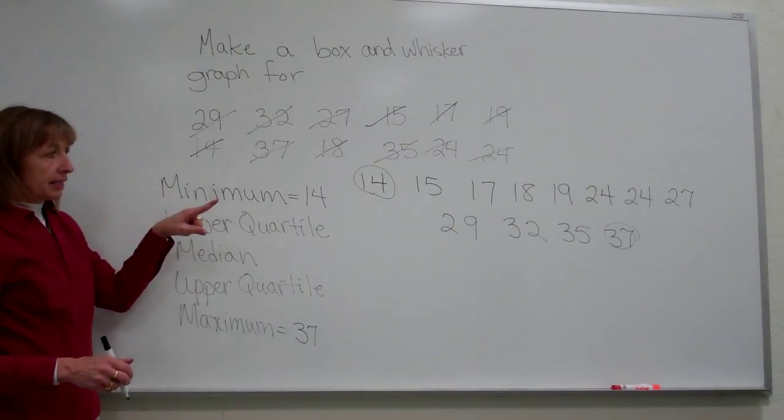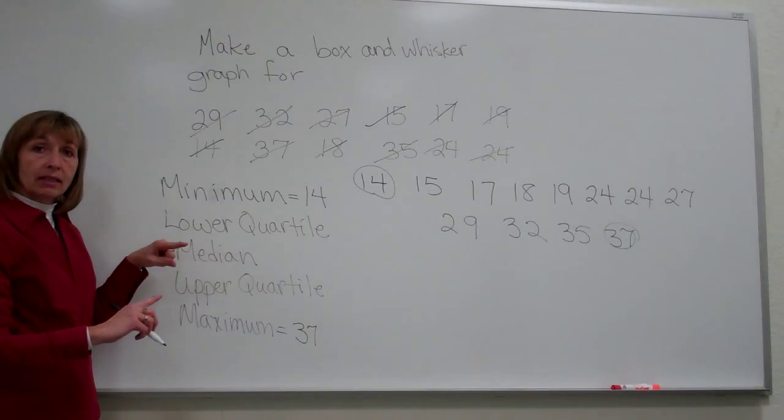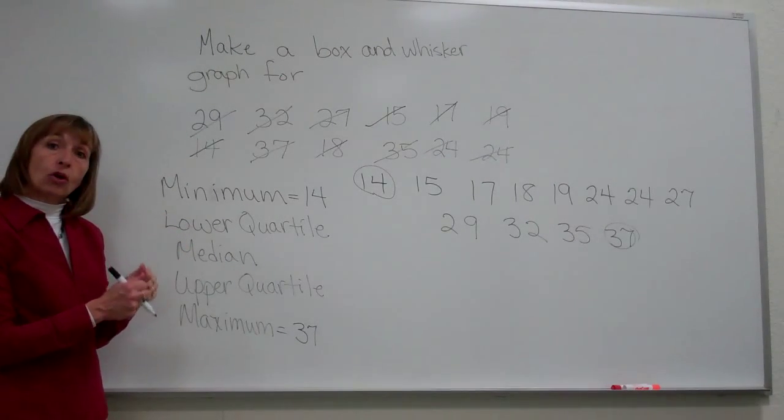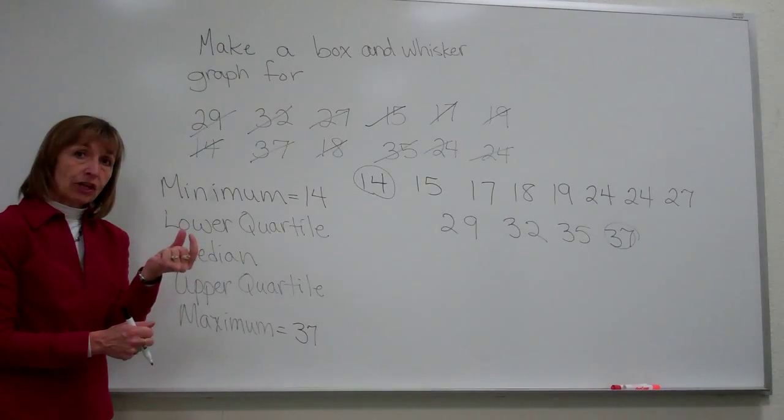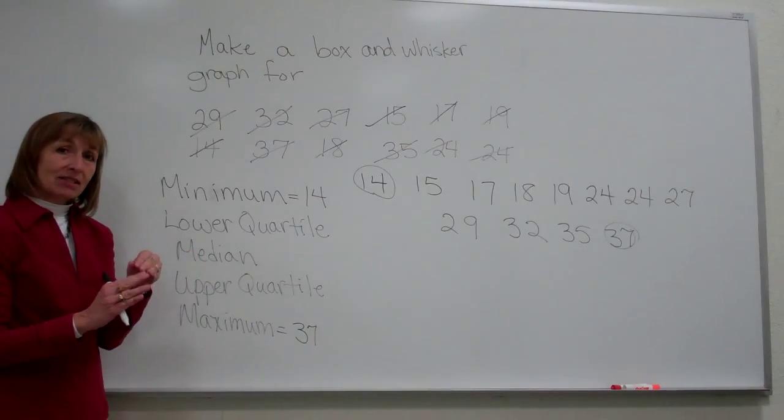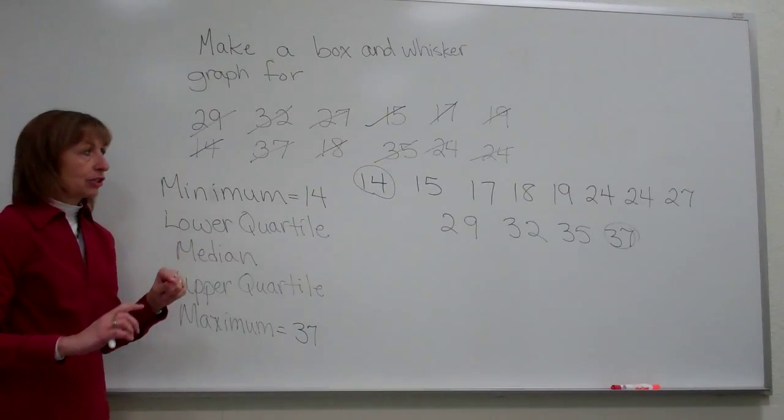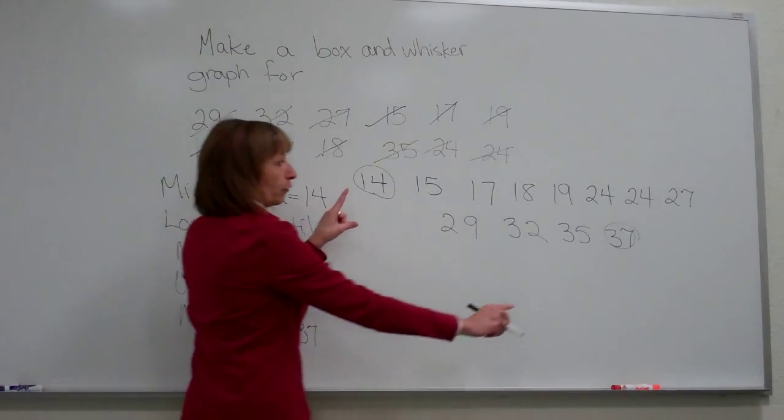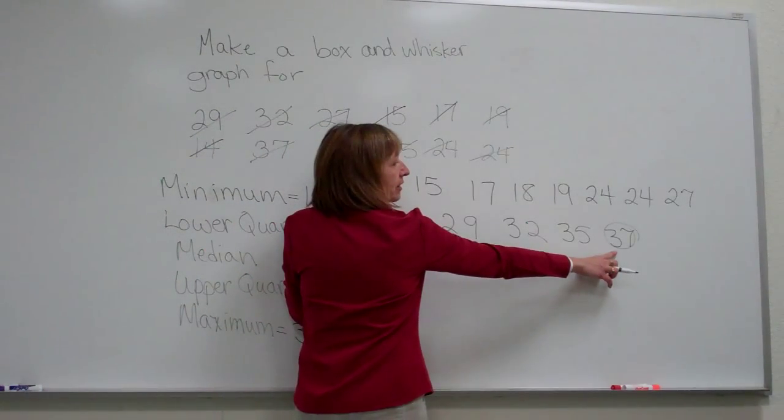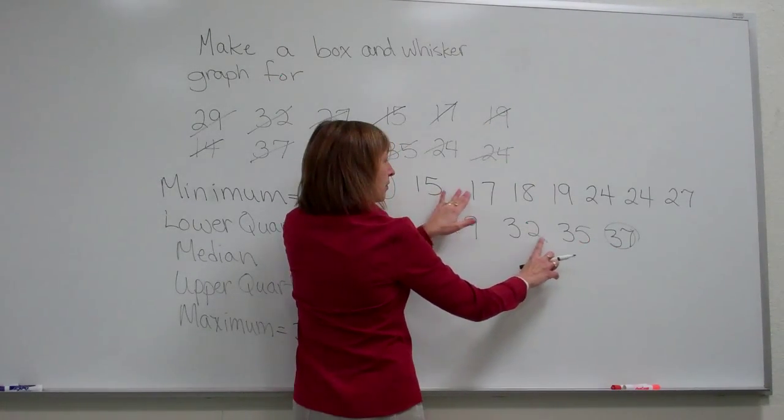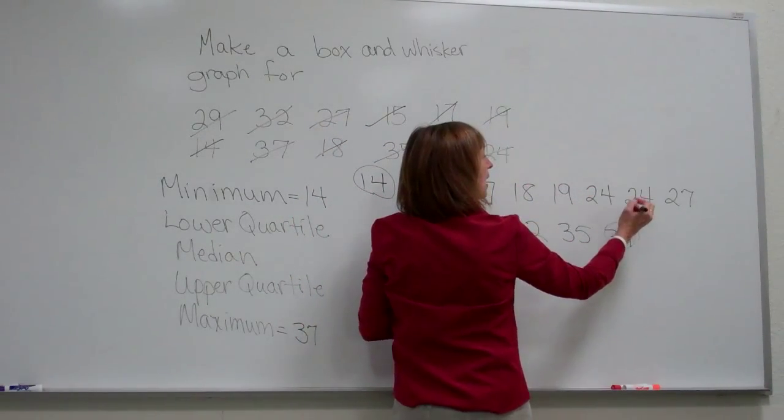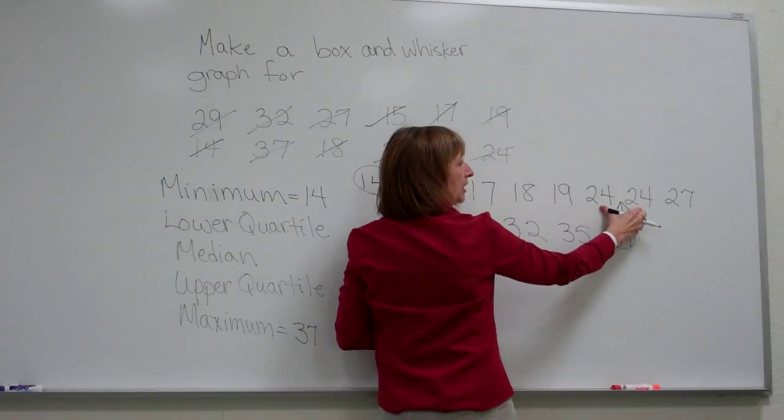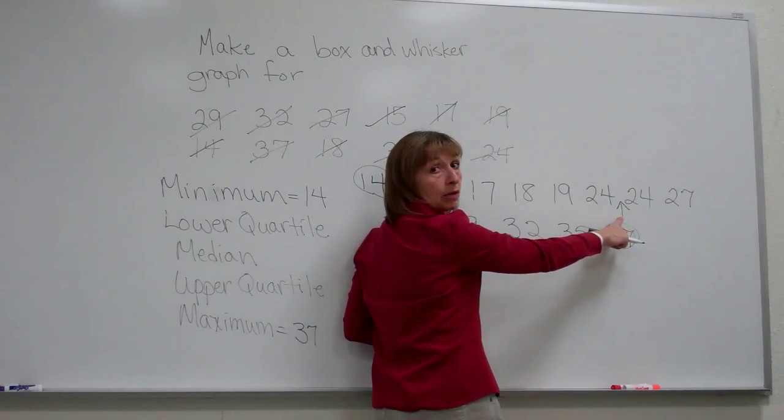As I have them in increasing order, I want to see what number is in the middle, and that's my median. If there is no number in the middle because I have an even number of data values, then I just find the average of the middle two numbers. When your data set's small, you can work your way through to see what your middle number would be. If we match up working from the outsides into the middle, I have the smallest and the largest, and then just work your way through matching them up. We see that I have 24 and 24 that span the middle.